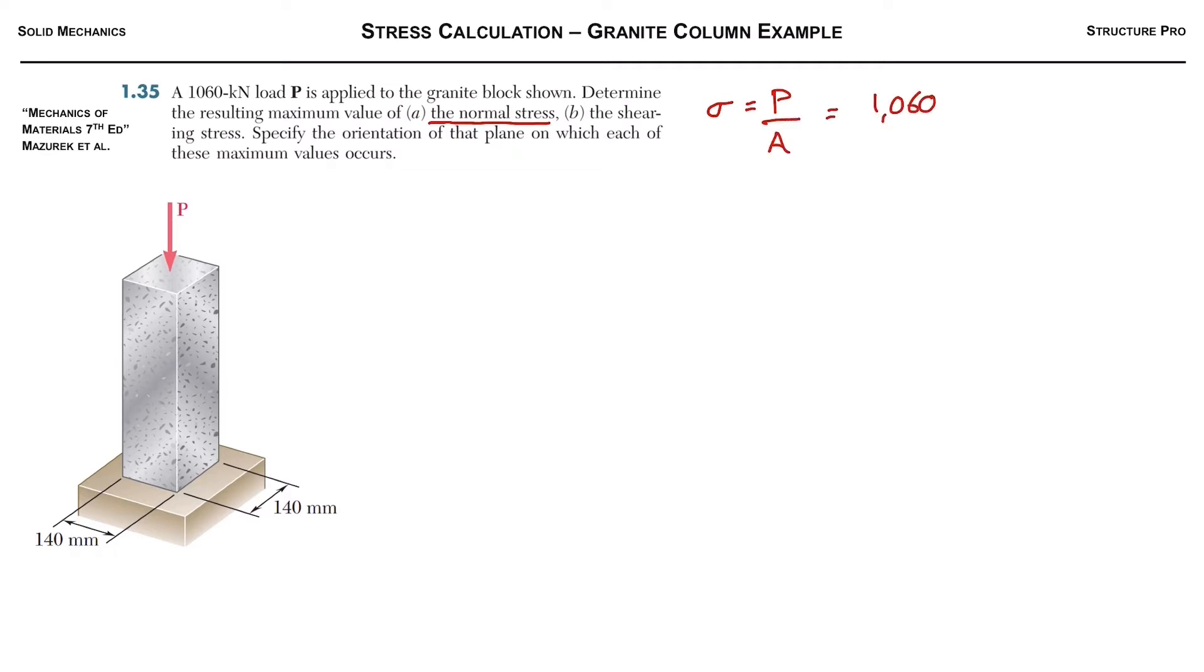This is pretty simple. We're just going to take the load P and divide it by the area of the block, which is 140 millimeters squared. So we got one million newtons divided by 140 millimeters squared, which gives you 54 MPa. Always good to use newtons and millimeters, then you get MPa.